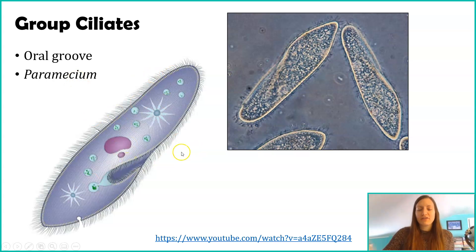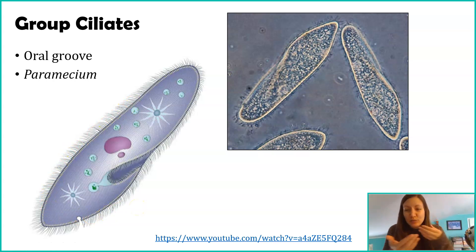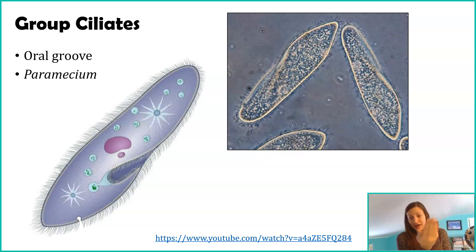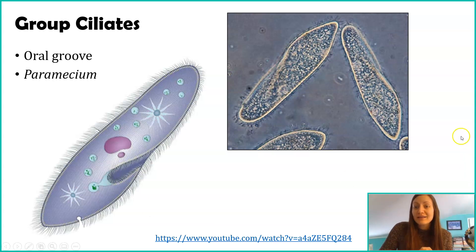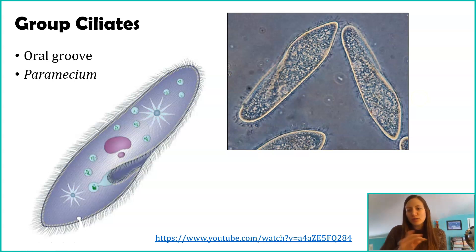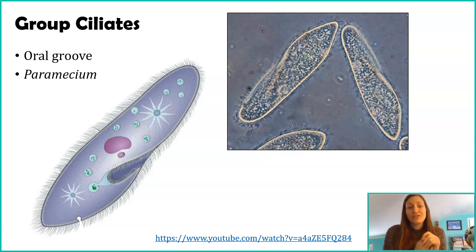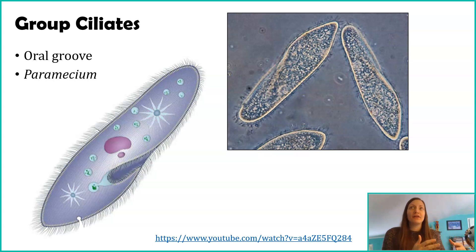Looking at the diagram on the left, this is just a diagram of a ciliate, and you see all of these hair-like extensions all around it. Because we're looking at a 2D view, you don't see it, but these are entirely covering the cell. The right-hand image is a picture of it under a microscope — it looks like a ring of cilia, but in actuality it's one hundred percent covering the cell. They use these cilia in a coordinated motion for movement.